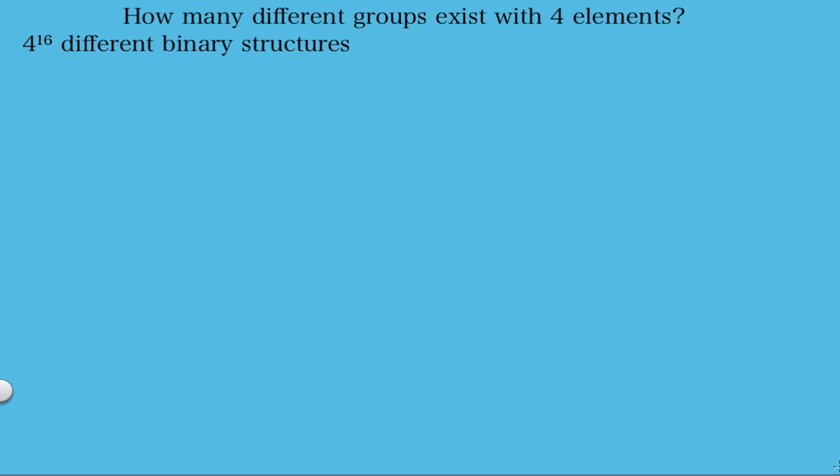So there's a huge amount of possible structures we have to look at here. And if you don't know how I got this number, you can click on this link to understand binary operation tables and how to calculate the number of different binary structures. Now we need to find out how many of these 4 to the 16 different structures are actually groups.